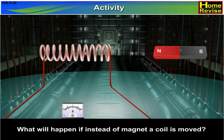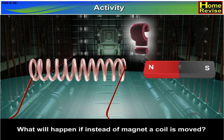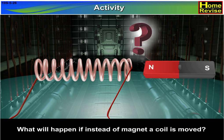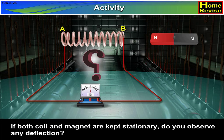What will happen if instead of the magnet a coil is moved? If both coil and magnet are kept stationary, do you observe any deflection?